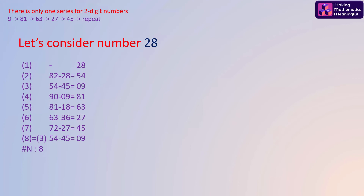For example, let's consider the two-digit number 28. The largest number formed is 82, the smallest is 28. Subtract them and repeat this procedure. You will observe that at the 8th step it matches with the 3rd step at 9, so after 9 you find 81, then 63, then 27, then 45, then 9 again — a simple loop.